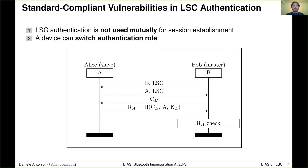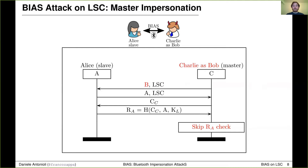The master impersonation attack works as follows. Charlie presents to Alice as Bob by sending Bob's Bluetooth address and also sends LSC support. Alice sends her Bluetooth address and LSC support, believing that she's talking with Bob. Then Charlie completes unilateral authentication with Alice, ignores the response received from Alice, and continues session establishment without having to authenticate to Alice.